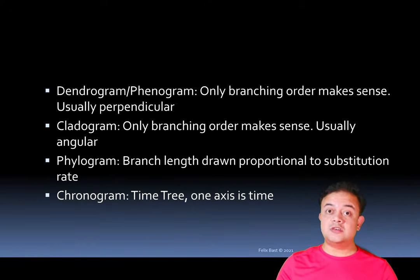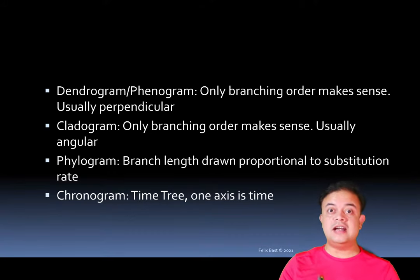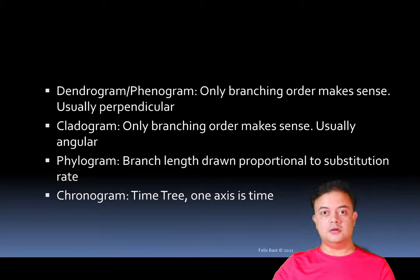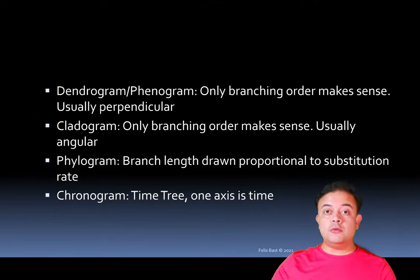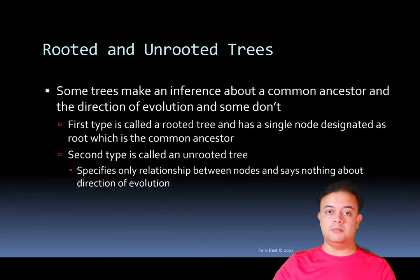To draw a real time tree, you need calibration checkpoints — these are dated fossils. You can date fossils using various radiometric dating approaches with different radioactive isotopes, checking their ratios to determine the exact date of a particular fossil. If you have radiometrically calibrated fossils, you can use them as checkpoints in the tree to produce a chronogram.